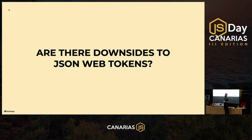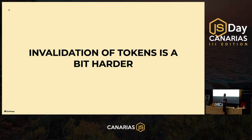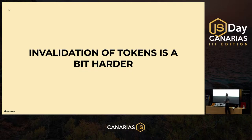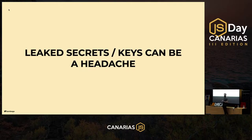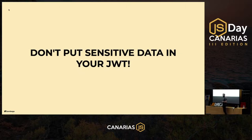Are there downsides to JSON web tokens? Yes. First: invalidation is harder. Since the JWT contains all validity information inside itself, once issued there's no way to revoke it until it expires naturally. You'd have to maintain a blacklist. Second: if you leak your secret or private keys, anybody can create tokens and impersonate your API or authorization server — so keep them secure. Third: don't put sensitive data in a JWT — it's base64 and easily decoded.